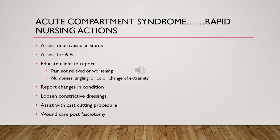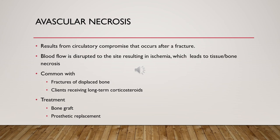Avascular necrosis is a complication of musculoskeletal trauma resulting from circulatory compromise after a fracture. Blood flow is disrupted to the site, resulting in ischemia leading to tissue and bone necrosis. This is common with displaced fractures and surgical repair fractures. Patients may need long-term corticosteroid therapy, bone grafts, and possibly prosthetic replacements.